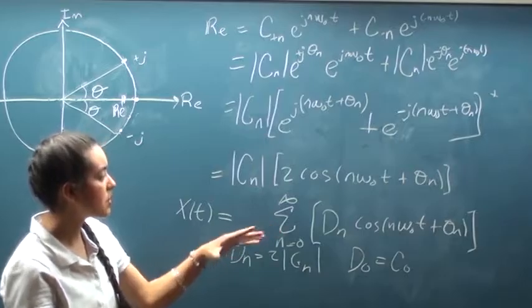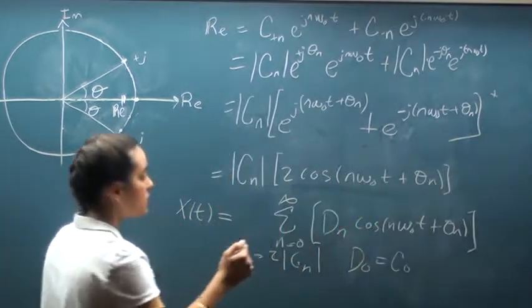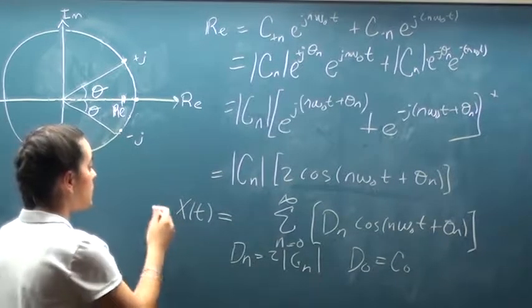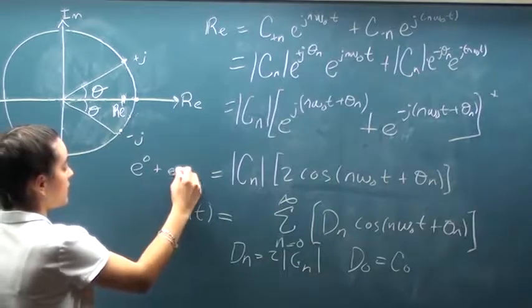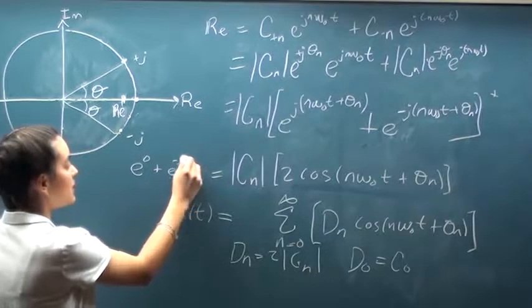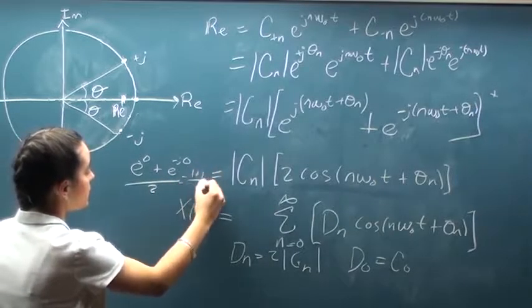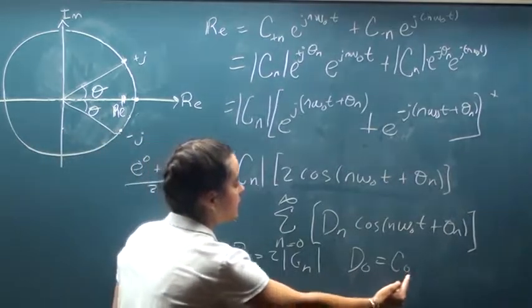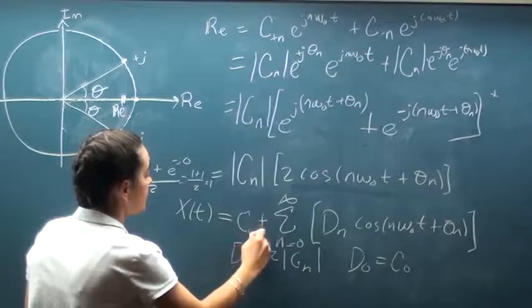Now why is this so? If we take a couple of steps back, we know this is the Euler's formula representation for cosine. So if we plug in zero for theta, we'll get e to the zero plus e to the negative j zero over 2. So then we'll end up getting 1 plus 1 over 2 equals 1. So that's why our d naught is going to be equal to c naught. So here we can just add c naught.